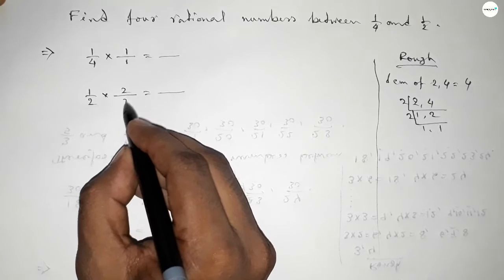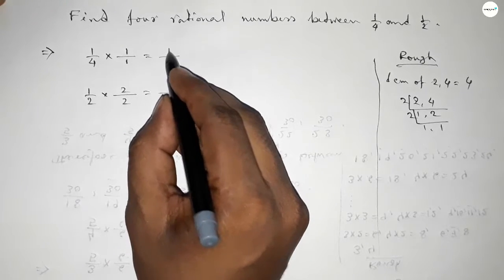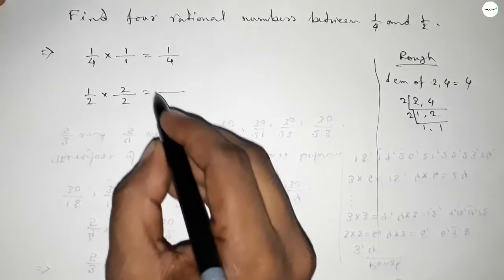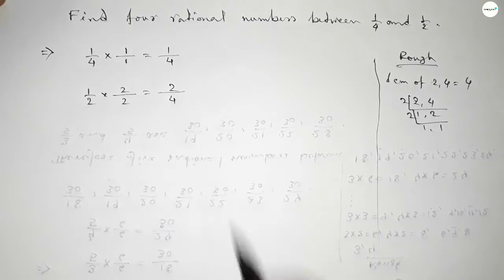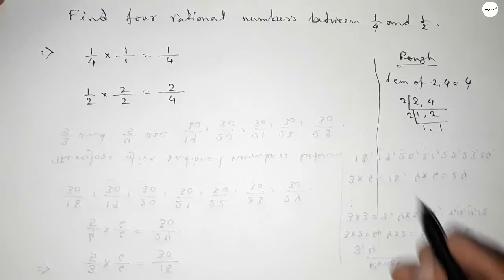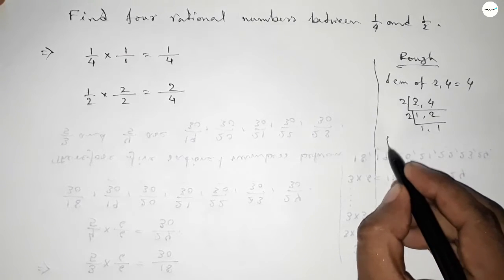So we should multiply up and down: put one and one here, and two here, so we can get one over four and two over four. Now for finding four rational numbers between any two numbers...